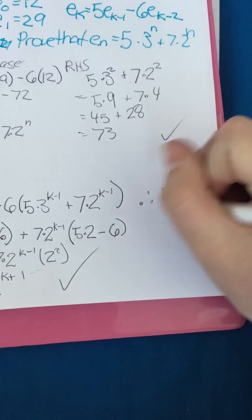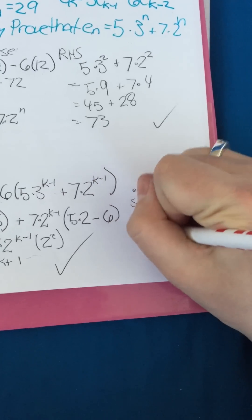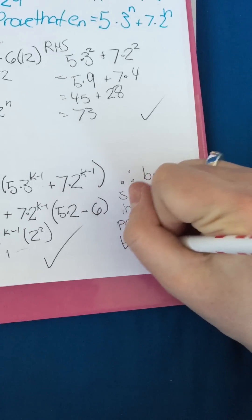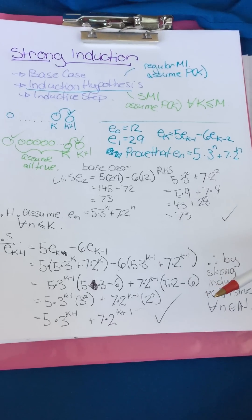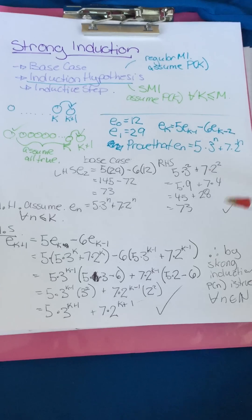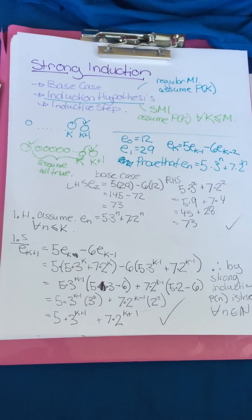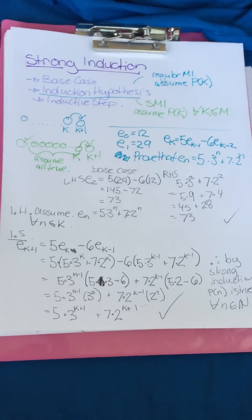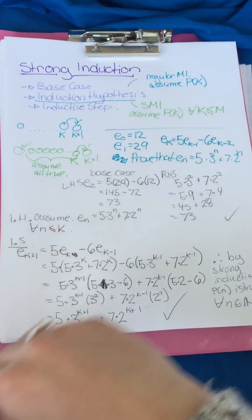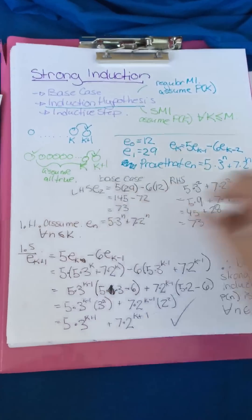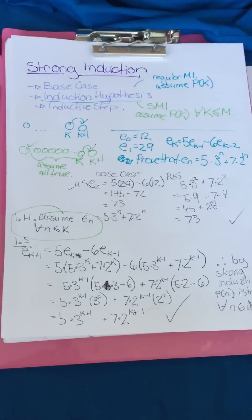Therefore, by strong induction, P(n) is true for all n in the natural numbers. There's another example in the next video about postage stamps — it would take too long to fit here. Hopefully this is a good basis for strong induction. It's very similar to regular induction; the key difference is making sure you have your induction hypothesis correct, because that's where the change happens. Good luck!